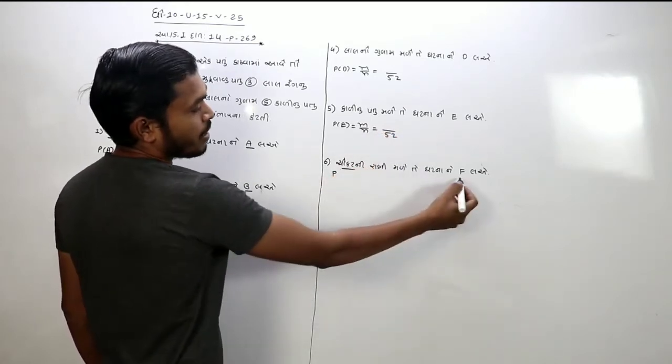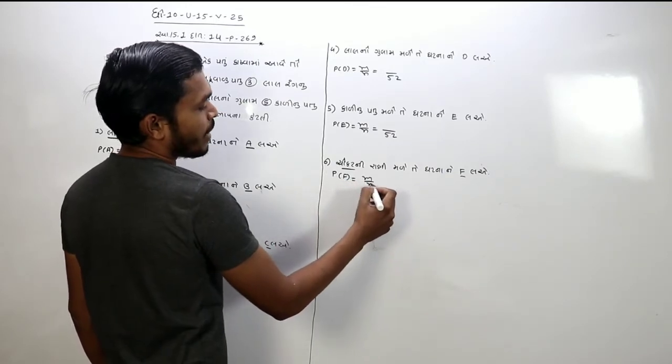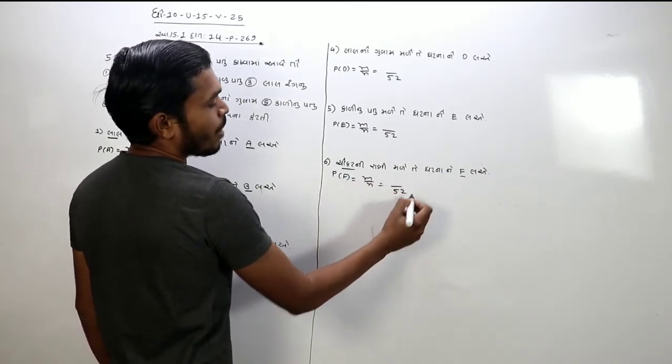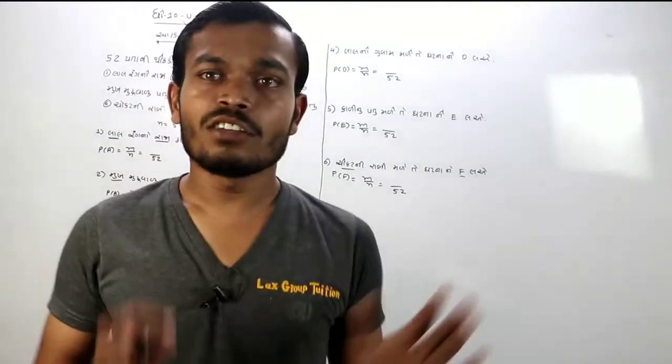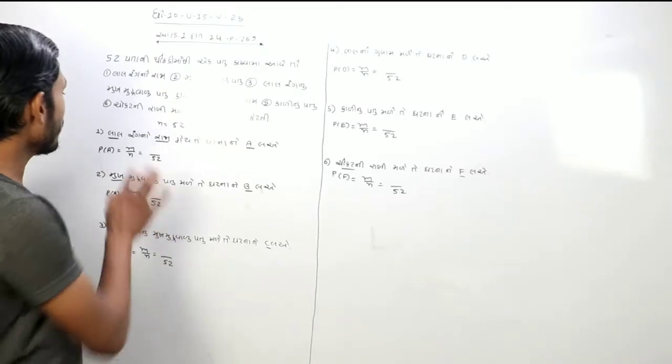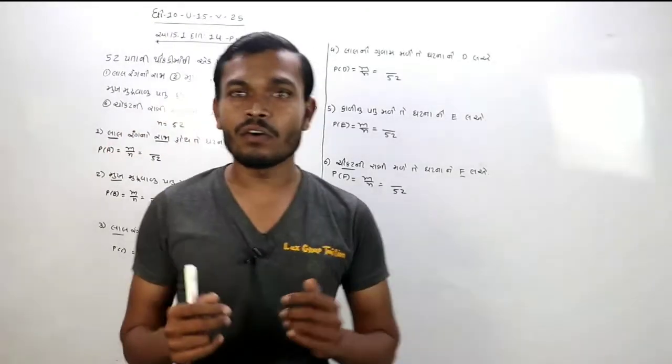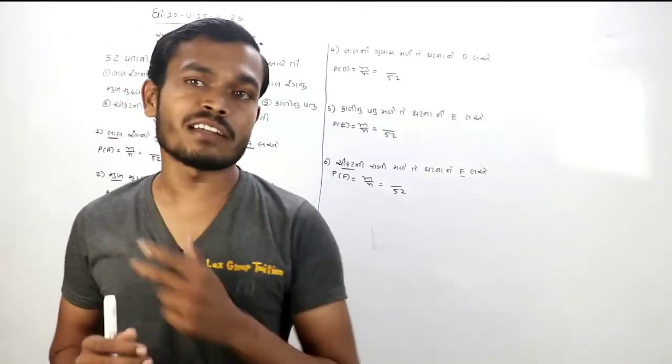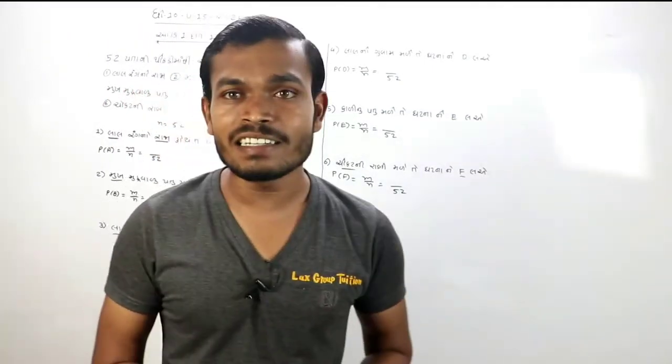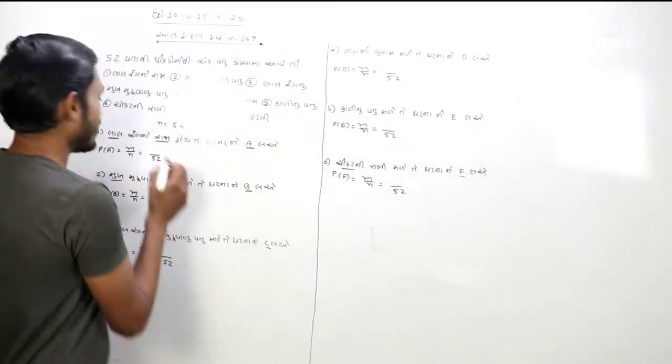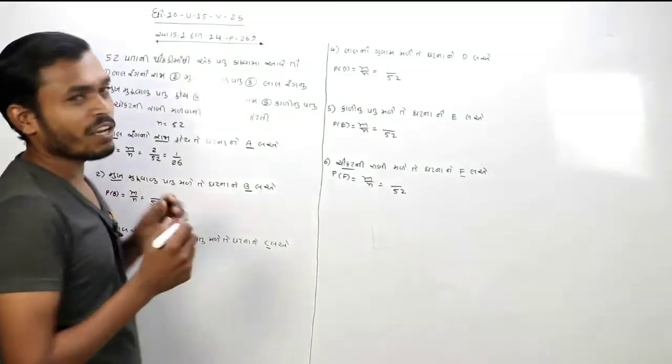તેયાર બાદ આપણે ચોકર્ટ ની રાણી મોળે તે ઘટ્ણને આપણે F લીગુજે તો PF લખી સું વનાડ દા 26 તો 1 બાગે 26 ઇનો જવાબ હસે